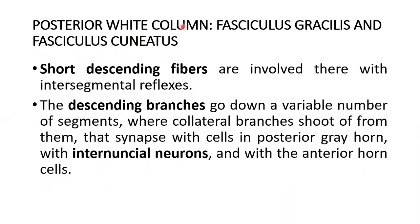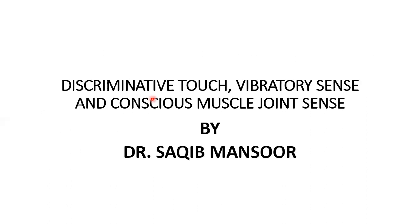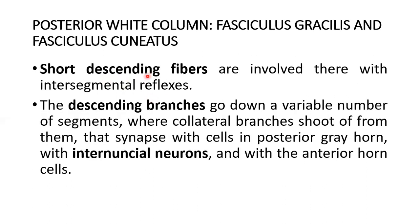The posterior white column fibers divide into short descending fibers and long descending fibers. Their axons travel from the posterior root ganglion and reach directly to the posterior white column of the same side. The short descending fibers are involved in intersegmental reflexes, and the descending branches go down a variable number of segments where collateral branches synapse with cells in the posterior gray horn, with interneurons, and with the anterior horn cells.